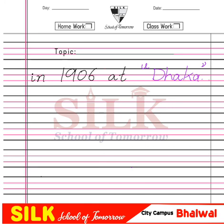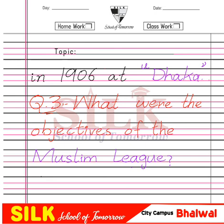Very good. All India Muslim League was formed in 1906 at Dhaka. The All India Muslim League — where was it formed? It was formed in 1906 in Dhaka. Now put the heading for question number 3. Question number 3 is: What were the objectives of the Muslim League?